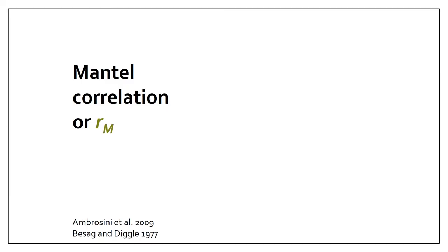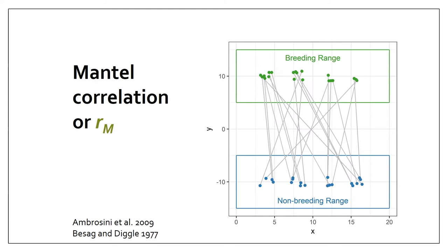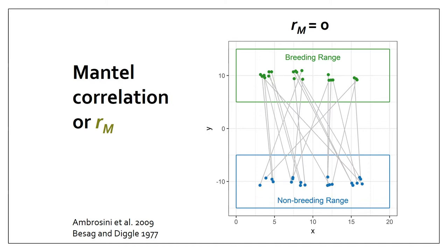Hi, my name is Jeff Hostetler. I'm a former postdoc at the Smithsonian Migratory Bird Center and, along with Emily, a co-lead author of this work. The most commonly used metric of migratory connectivity strength is the Mantel correlation, or RM. To calculate RM, you first need the locations of animals — where individuals are located in both the breeding and non-breeding grounds. You then calculate the distances between each pair of individuals in both regions. RM is the correlation between these distances. A correlation of zero means no connectivity, and as it approaches one, the connectivity is stronger.